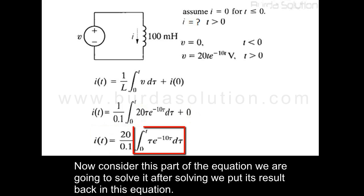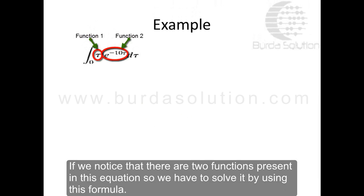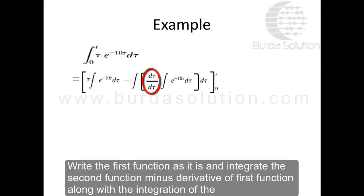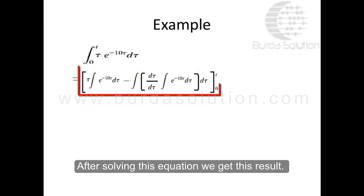Now consider this part of the equation — we are going to solve it and then put its result back. There are two functions present, so we solve it using the integration by parts formula: write the first function as is, integrate the second function, minus the derivative of the first function multiplied by the integration of the second function, and then integrate that second term.